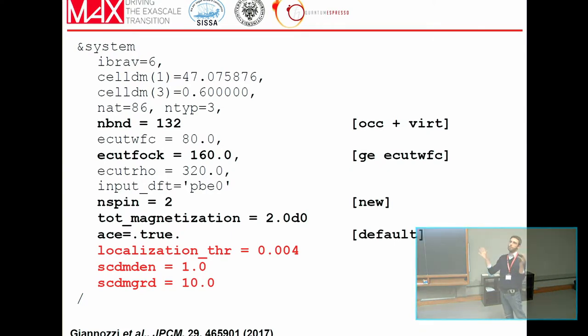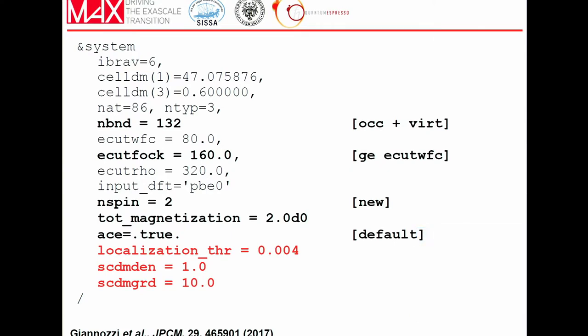All this methodology has been implemented in Quantum Espresso using three thresholds: two thresholds related to the SCDM localization, which control the size of the matrix for the QR decomposition, and one threshold that is the most important parameter — it tells us how many orbital pairs are neglected in the calculation of the exchange potential. While the localization thresholds tune the orbital localization, this third threshold is really related to the accuracy, as it represents the approximation being made.